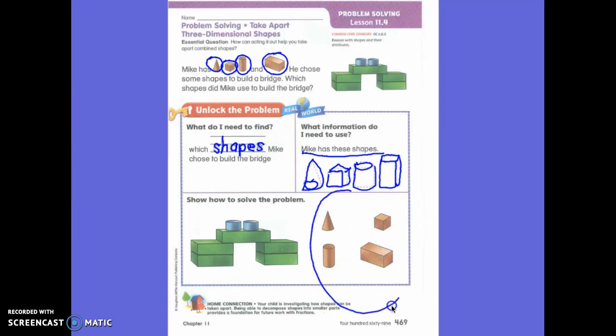Here are my four shapes that Mike used. You need to circle only the shapes that he used to build his bridge. Go ahead and get out your top colorful page and do that.